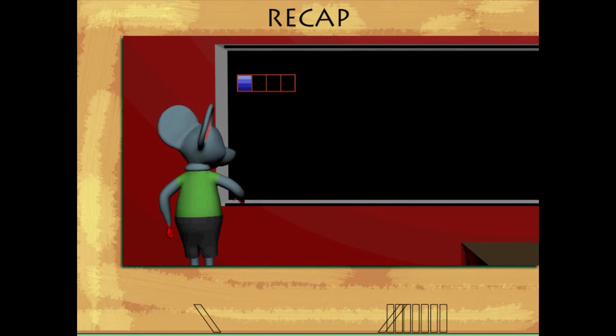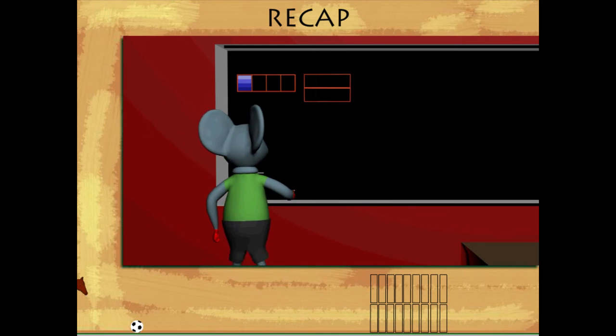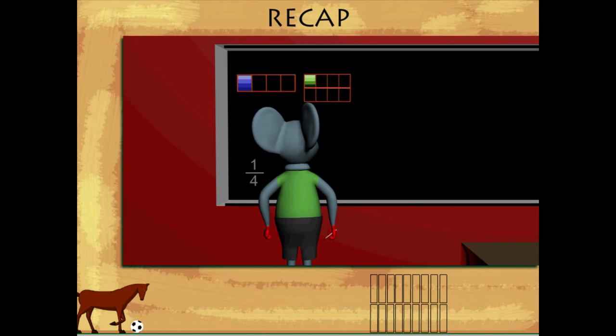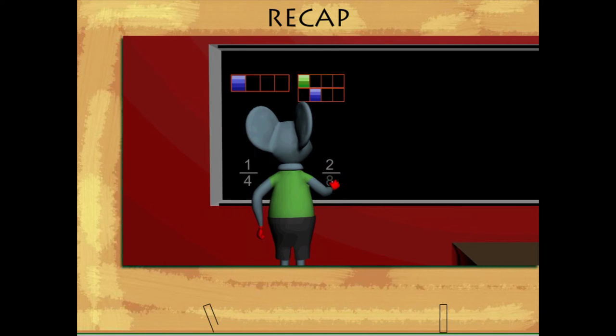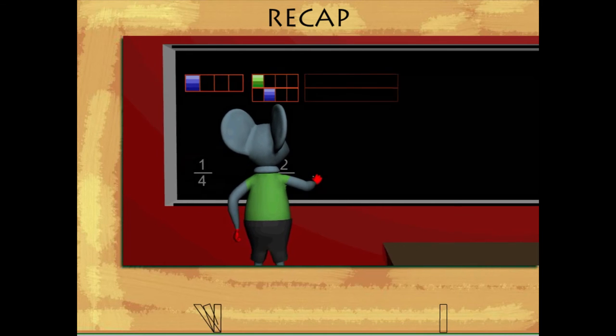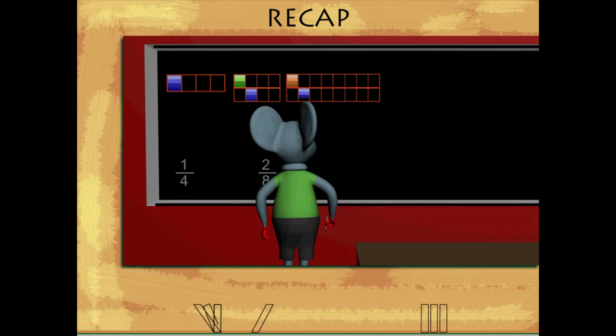In the next drawing, two out of eight parts are shaded, so Toby writes two by eight. In the third drawing, four out of sixteen parts are shaded, and Toby writes four by sixteen.